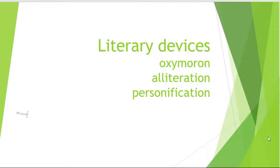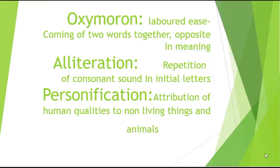Now let's discuss the poetic devices in the second and third stanza. 'Labored ease' uses an oxymoron — oxymoron means two words opposite in meaning coming together. 'Labored' means difficult and 'ease' means easy — so they are opposite, making it an oxymoron. There is also alliteration with repetition of consonant sounds, and personification is used as well.